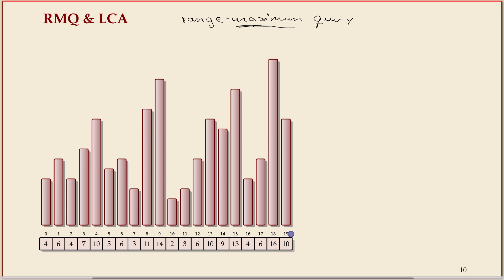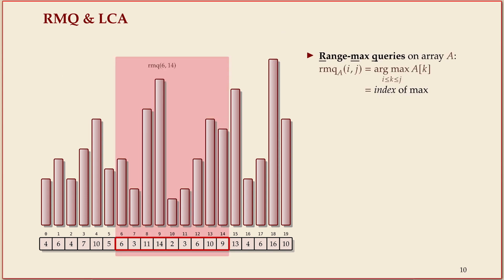So imagine you have an array of numbers and you want to solve the range maximum query problem — for every range, you want to know what the maximum in that range is. To visualize it, let me draw a bar or pole instead of the numbers that has as height the value of that number. The overall maximum is then obvious from just visual inspection.